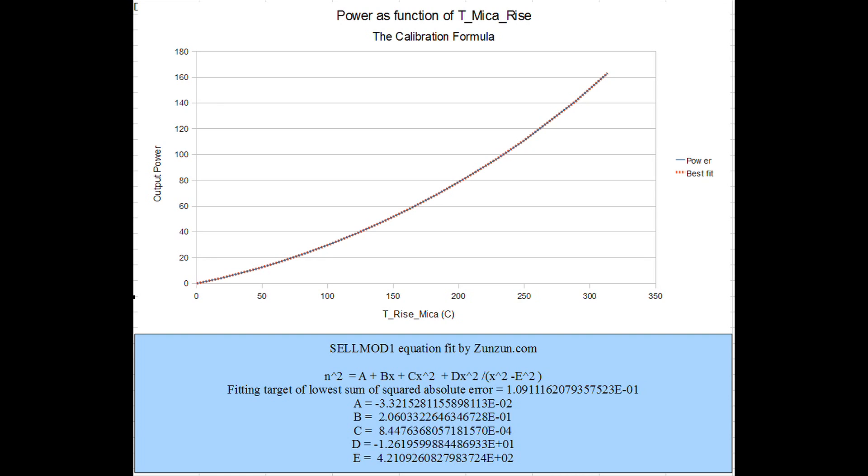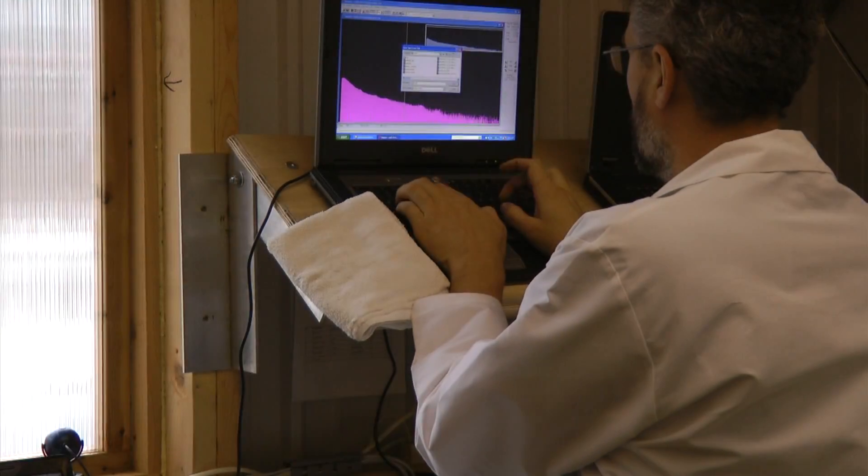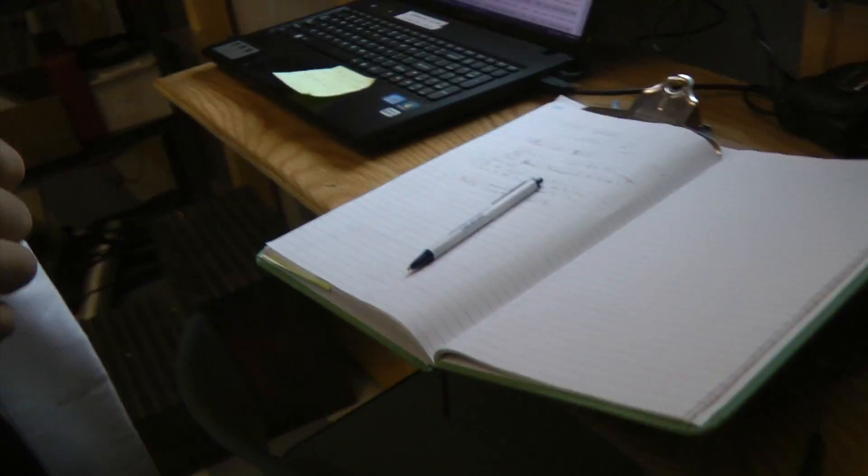This simple calculation can easily be misleading though. Any time the input power changes, it takes a while for the temperature in the cell to adjust. Until it settles into equilibrium again, the excess power calculation is wrong.